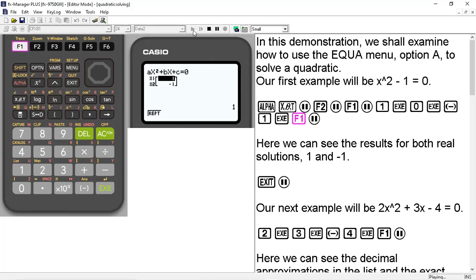And it brings us to our solutions here. Our solutions are put in a list, either 1 or -1. And whatever one is highlighted in the list here will also be shown down here in its exact form, whenever possible. So this is how you can use the equation menu for solving quadratics. But we're going to do a few more examples here.